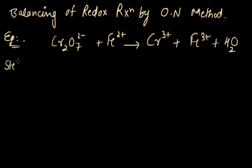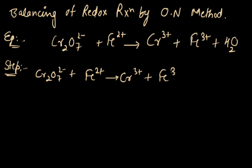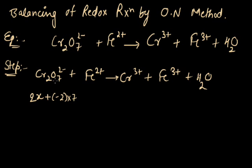Step 1: Firstly, we write the equation and find the oxidation number on each atom. We find the oxidation number of chromium in the dichromate ion. Let the oxidation number of chromium equal X. There are 2 atoms of chromium, so we multiply by 2. The oxidation number of oxygen is minus 2, and we multiply by 7 because there are 7 oxygen atoms. The total equals minus 2, which is the charge on the dichromate ion.